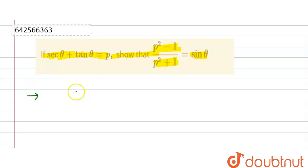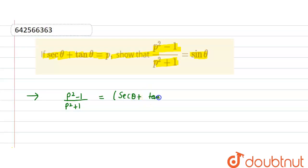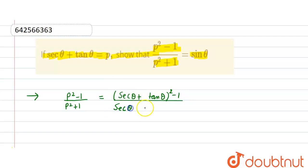Let's start. (p² - 1) / (p² + 1) is equal to (sec θ + tan θ)² - 1 divided by (sec θ + tan θ)² + 1.